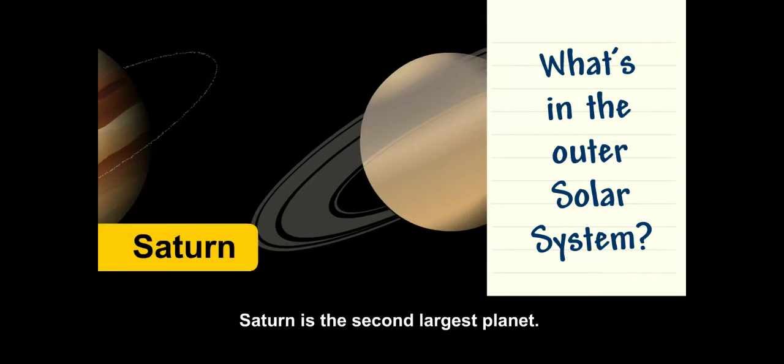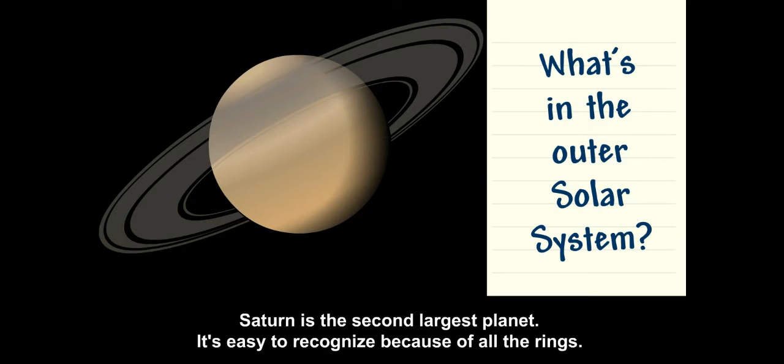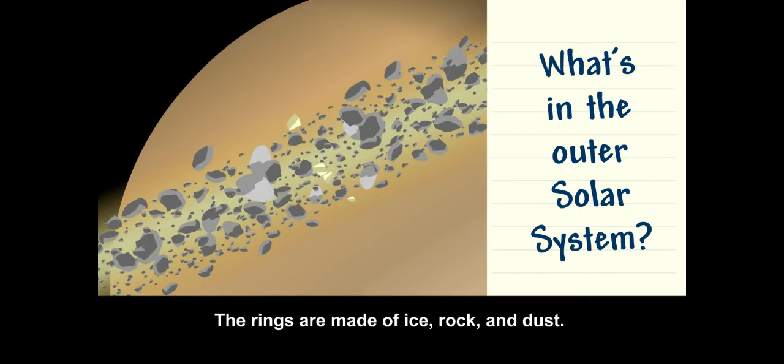Saturn is the second largest planet. It's easy to recognize because of all the rings. The rings are made of ice, rock, and dust.